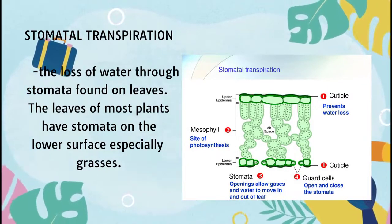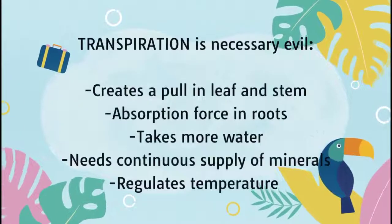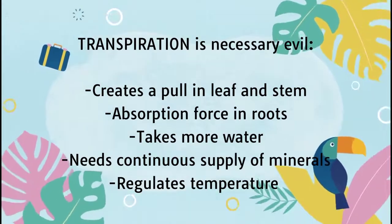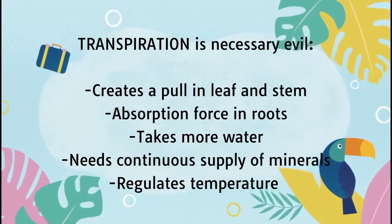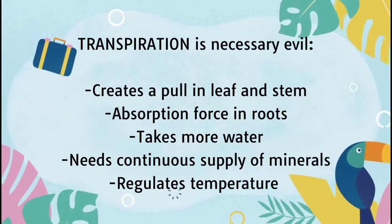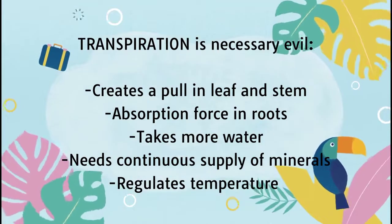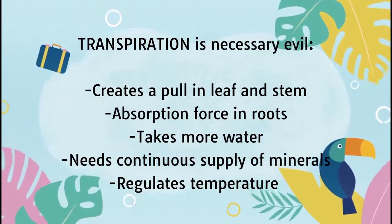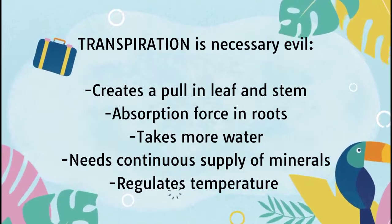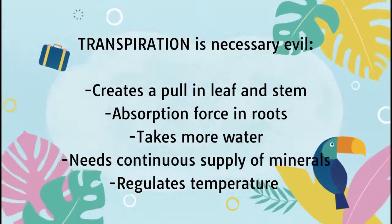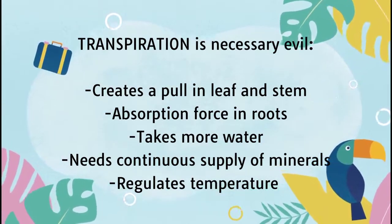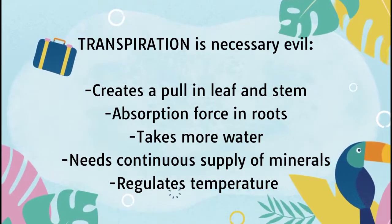Next, transpiration is called a necessary evil. It creates a pull in the leaf and stem, absorption by roots takes more water, there is a need for continuous supply of minerals, and it regulates temperature. It is called necessary evil because it can result in excessive loss of water from plants, as in periods of low relative humidity and high temperature, and worst, it can kill the plant.